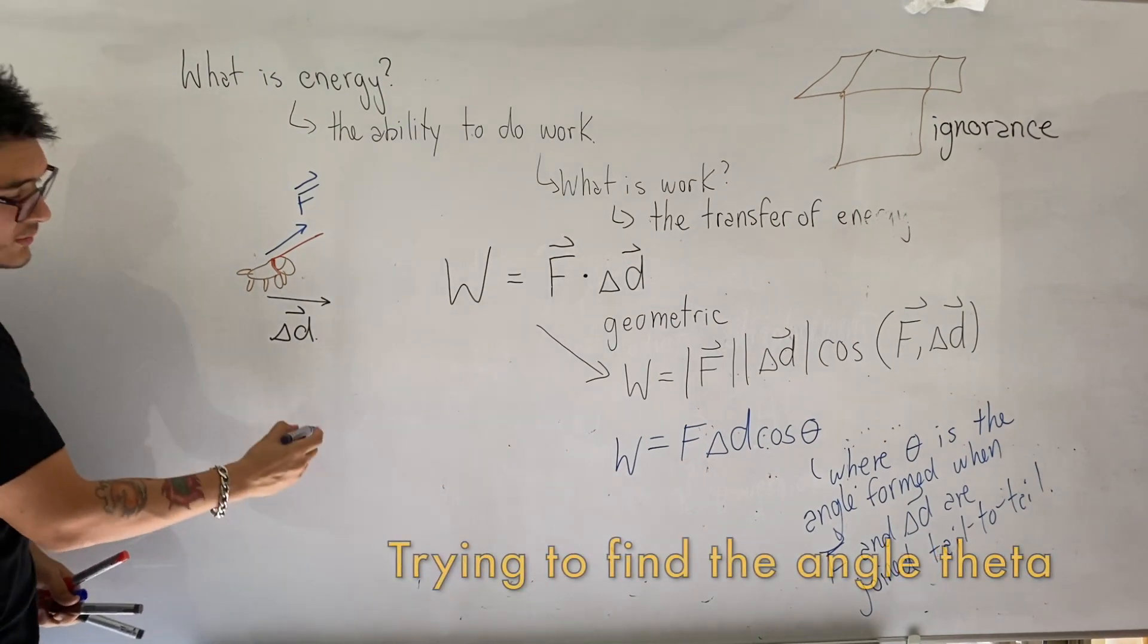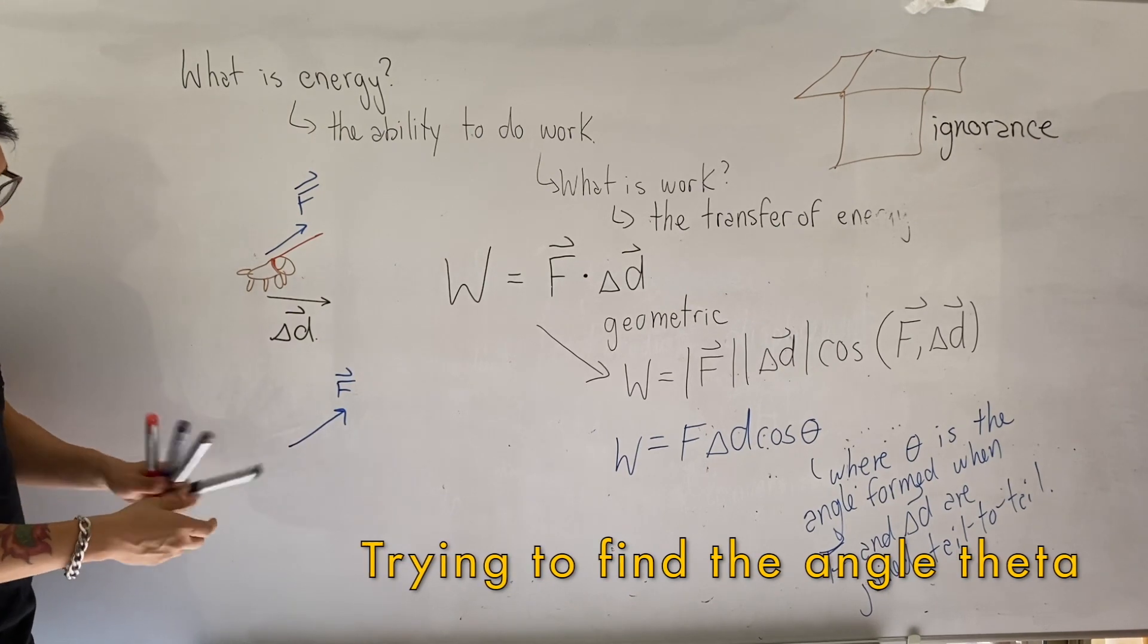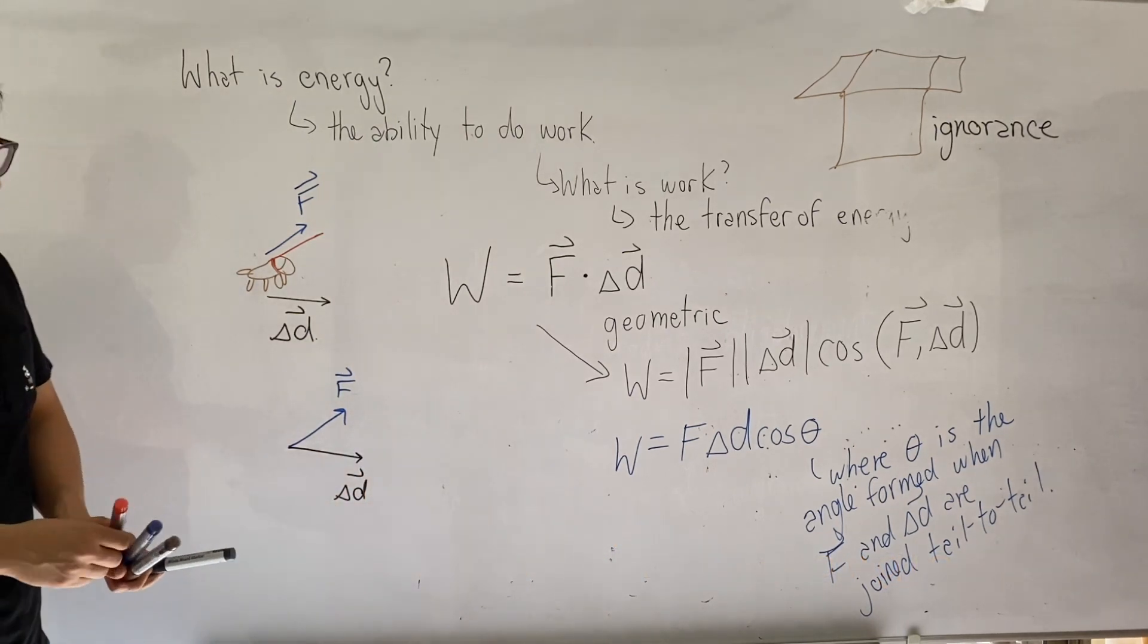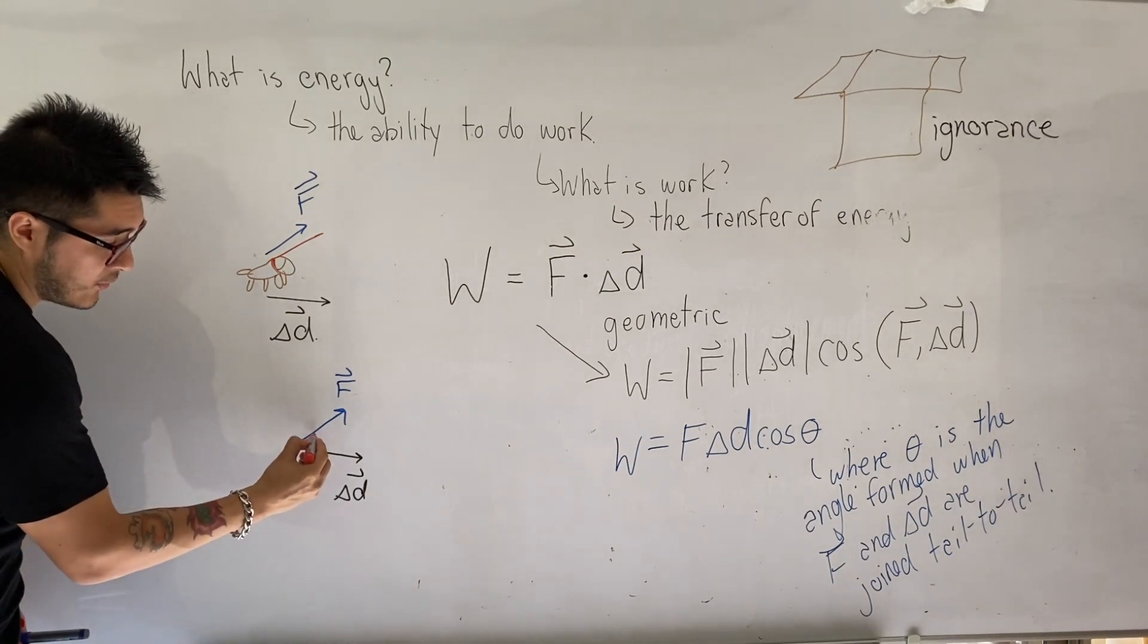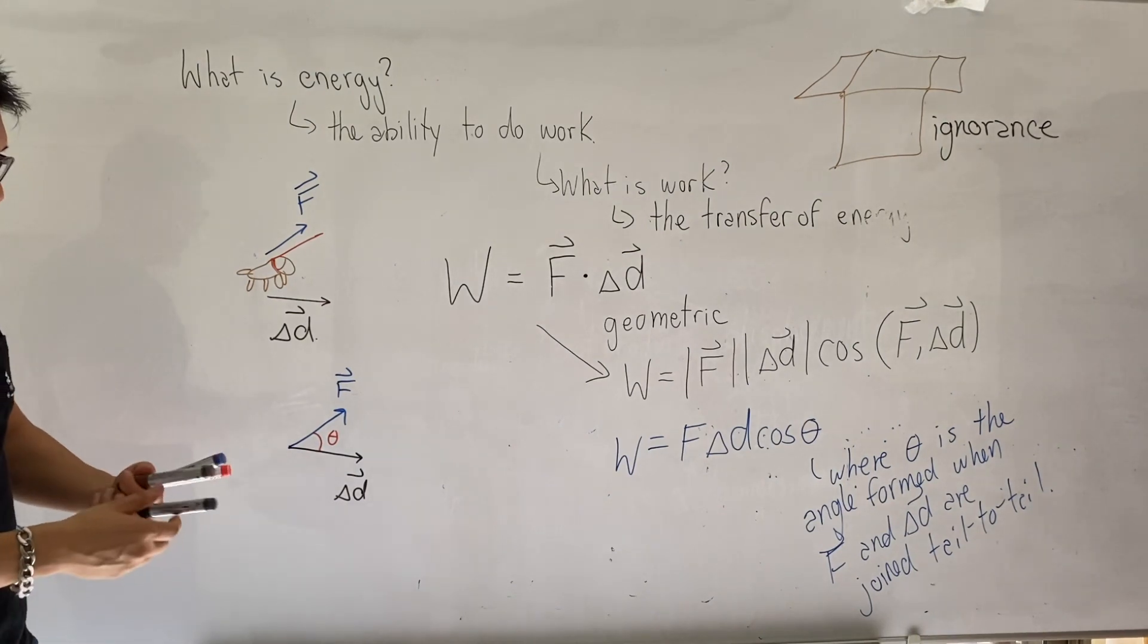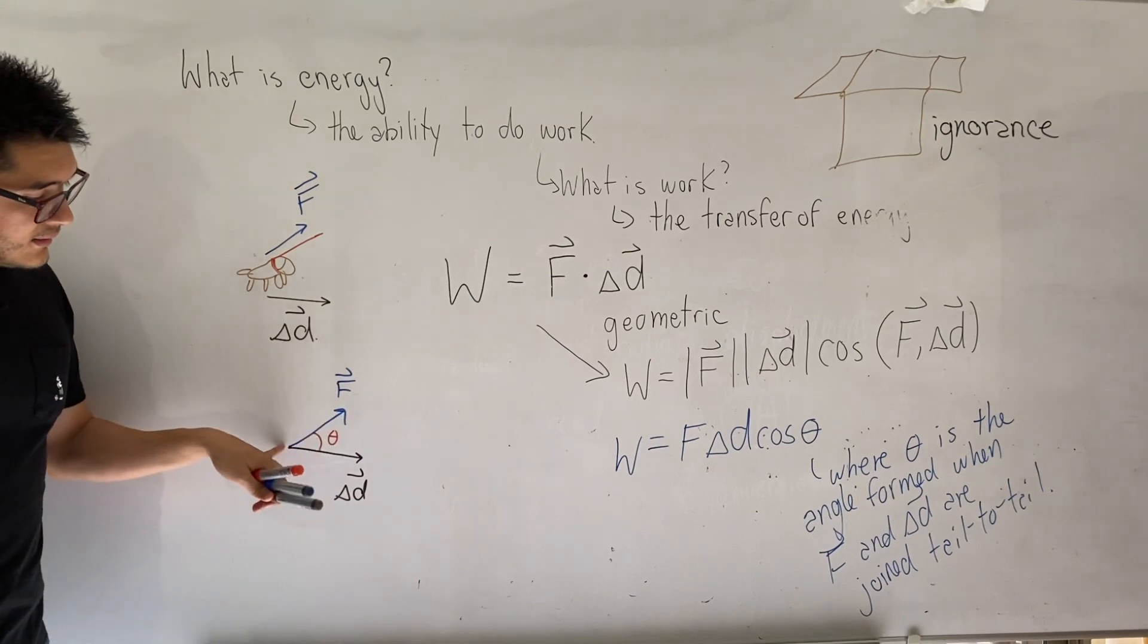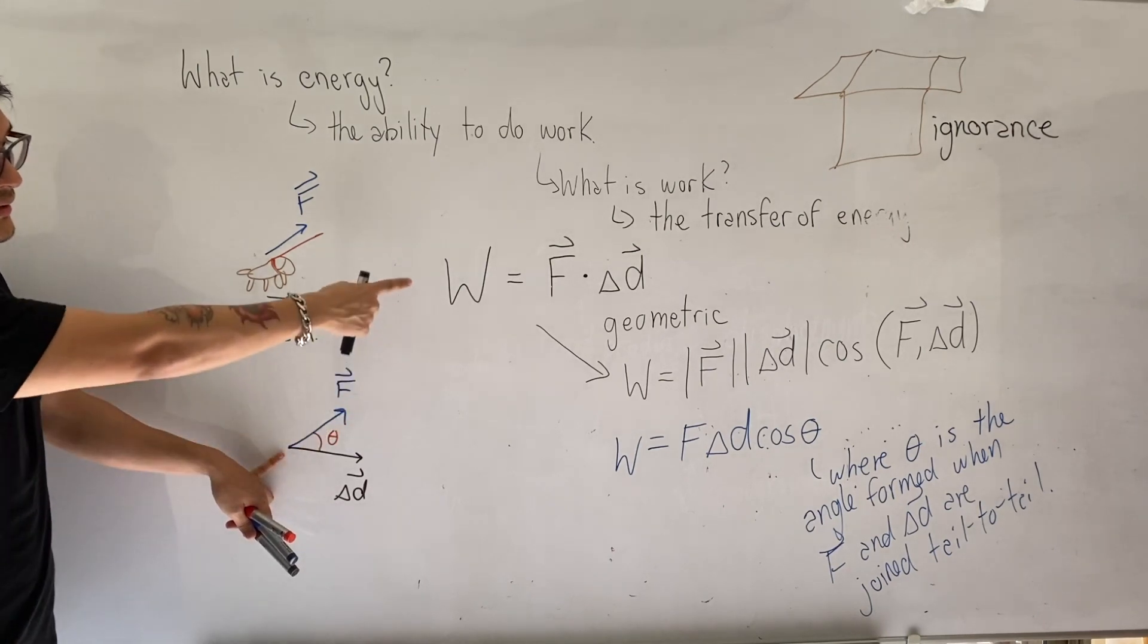You're going to redraw the two vector quantities, so you have the force vector and your displacement is to the right. Now in order to calculate how much work is done pulling your doggie, you need to find the angle formed when they are joined tail to tail. In this case, always try to make sure that you're calculating these quantities by drawing it tail to tail, and the angle formed between the two of them is going to help you calculate the work done.